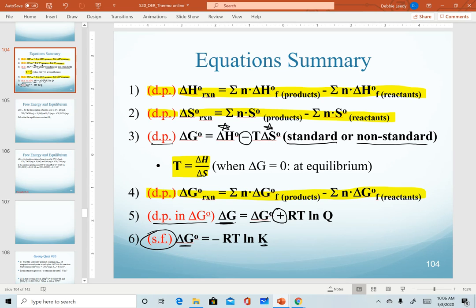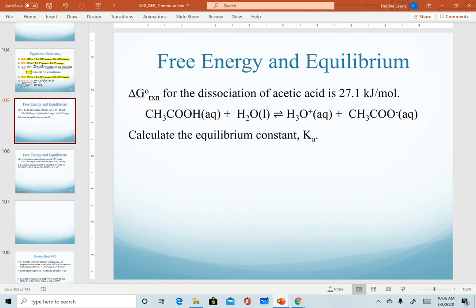This is a great summary slide of the equations that we're using. The last step that we have is to practice the last two equations that we have not used yet. Notice we are given standard delta G for the dissociation of acetic acid as this quantity. We want to calculate the equilibrium constant Ka, remembering that this is a subscript of A because we're working with acetic acid.